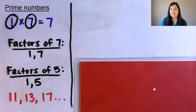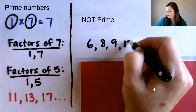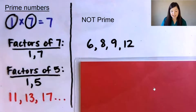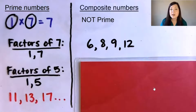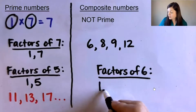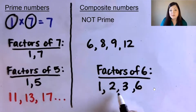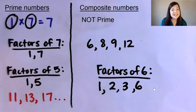Now, if those are prime numbers, can you name some numbers that are not prime? Maybe you said 6, 8, 9, or 12. All of these numbers have more than two factors — at least one other factor besides 1 and the number itself. These numbers are called composite numbers. Let's take 6 as an example. We know 1 times 6 equals 6, but we can also multiply 2 times 3 to get 6, so 2 and 3 are also factors of 6. That means 6 is a composite number.